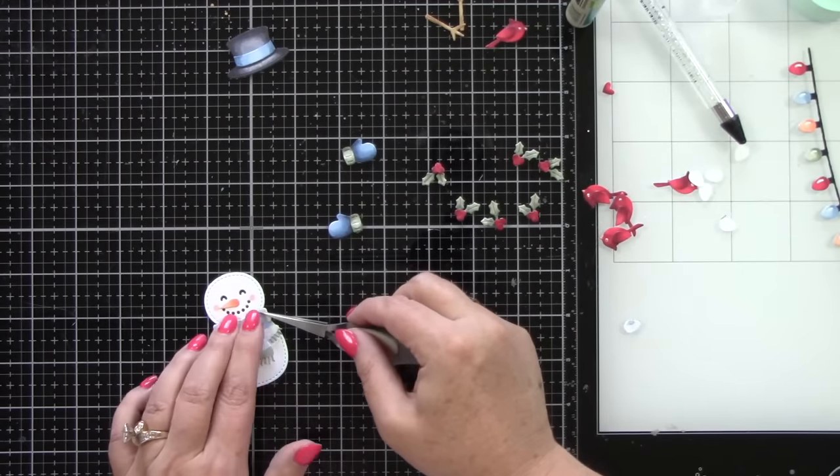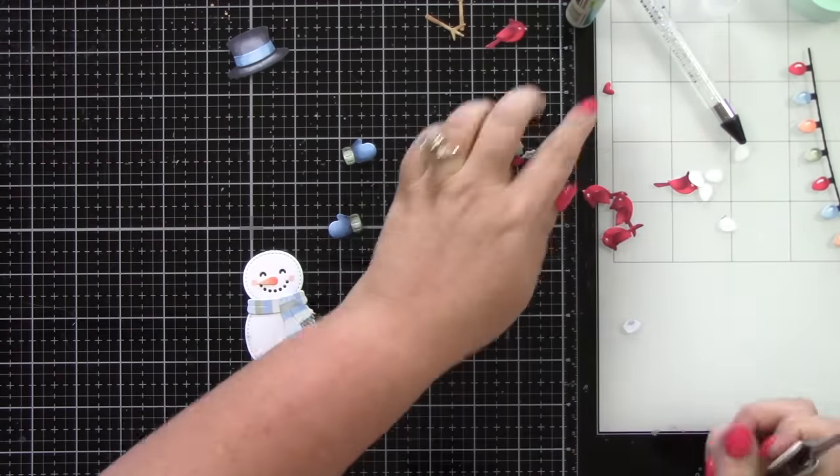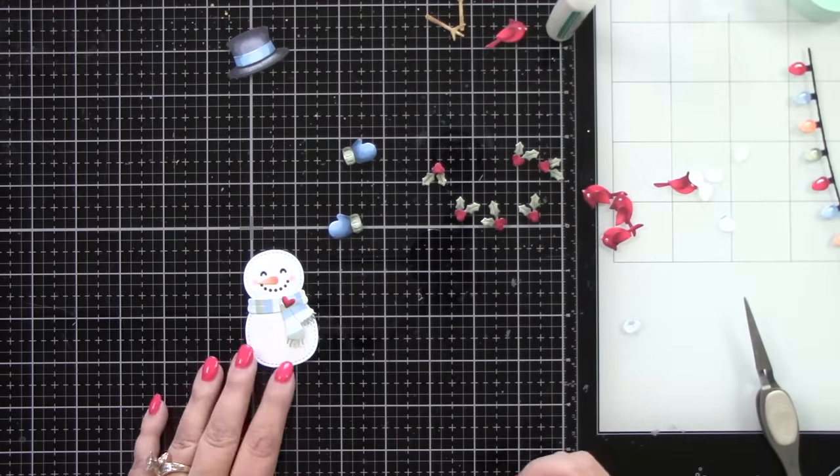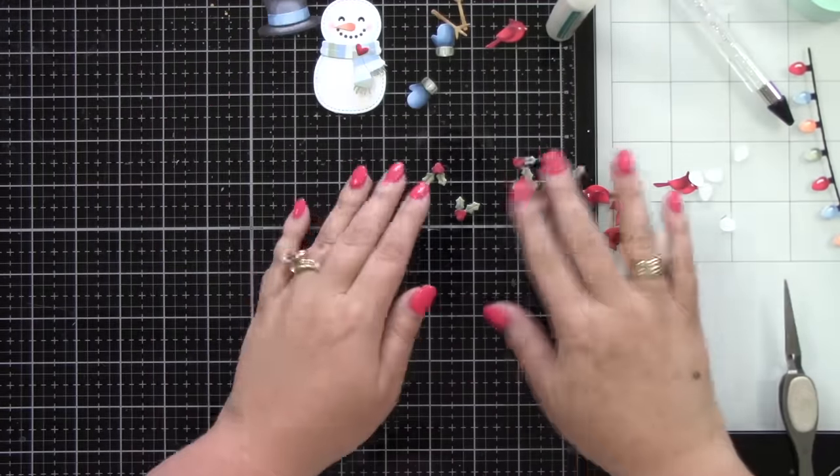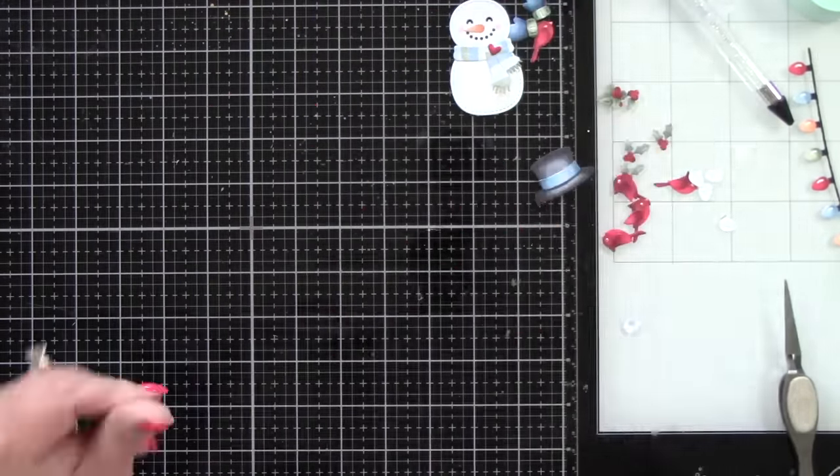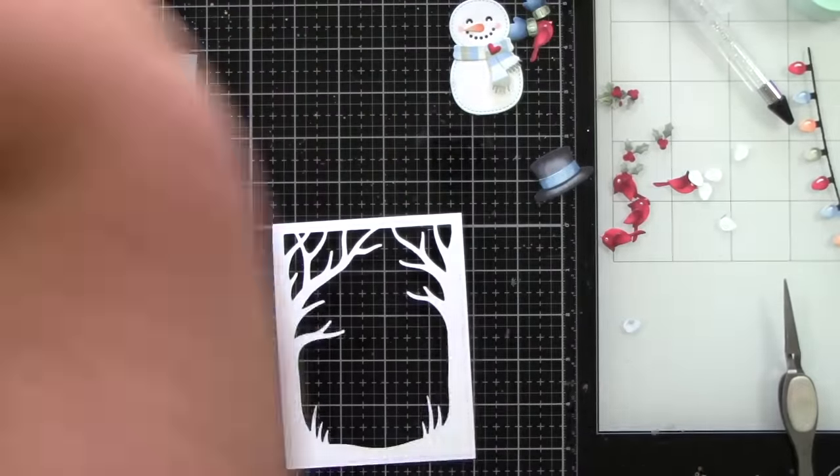And then I waited to put the snowman together because I needed to lay out my background to see where his hat and his arms needed to be. But I can put on his nose and his scarf. Look at how cute he is coming together. And I did give him rosy cheeks with the R30 Copic marker. Then there was a little heart from that die that I colored red. And I put that onto his little scarf.